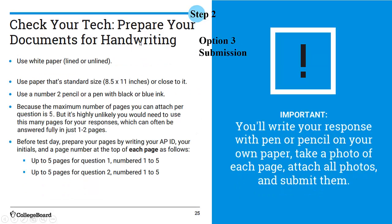If you're going to handwrite, get your documents ready: you need at least 10 pieces of paper, though there can be no more than five per question. Standard size paper, number two pencil, or preferably a pen with black or blue ink — make it dark so they can read it, write nicely. You can only attach up to five pictures for each one. Put your AP ID and initials at the top of the page and number the pages.